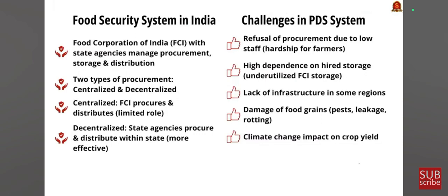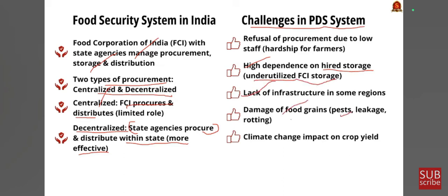The food security system in India: the Food Corporation of India manages procurement, storage, and distribution. There are two types of procurement — centralized, done by FCI with its own distribution, and decentralized, where state agencies procure from remote areas in states, which is more effective in practice. Challenges in PDS include hardship for farmers due to refusal of procurement due to lower staff, high dependence, higher storage costs, underutilized FCI facilities, lack of infrastructure in some regions, damage of food grains due to pests, leakage and rotting, and climate change impact on crop yields.